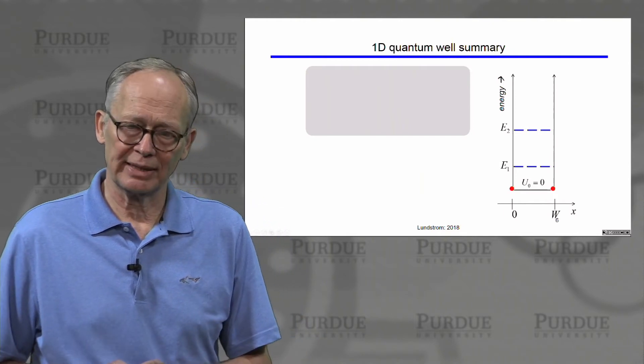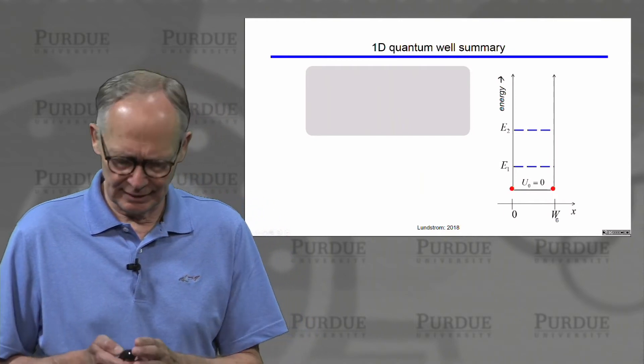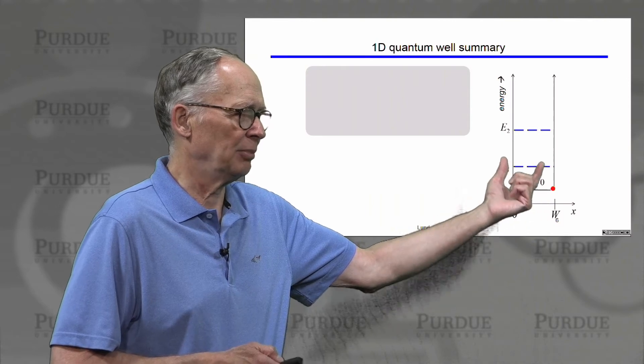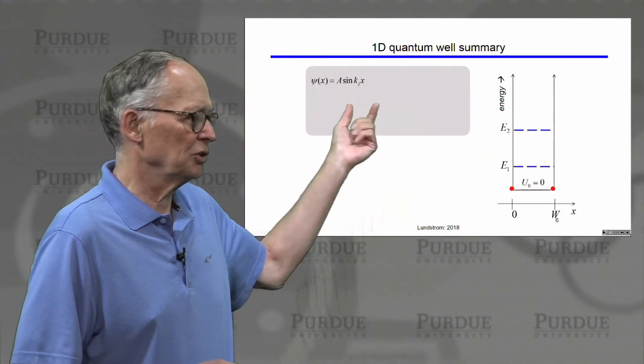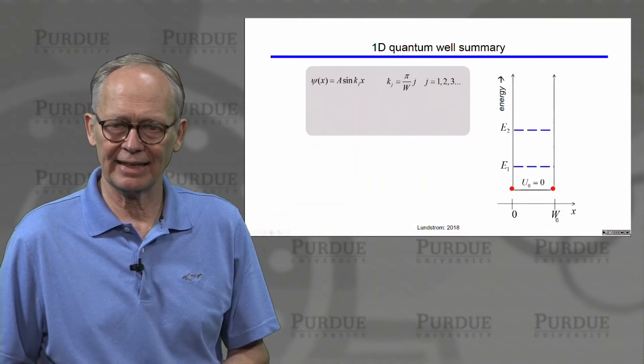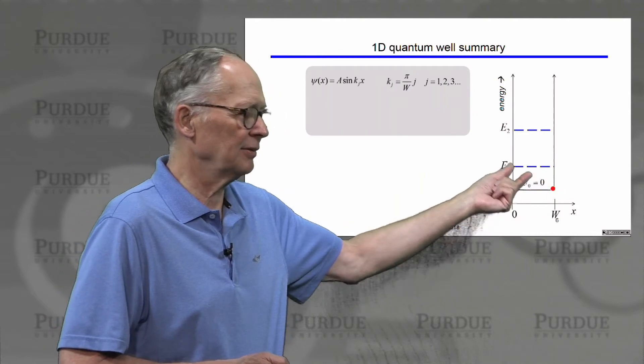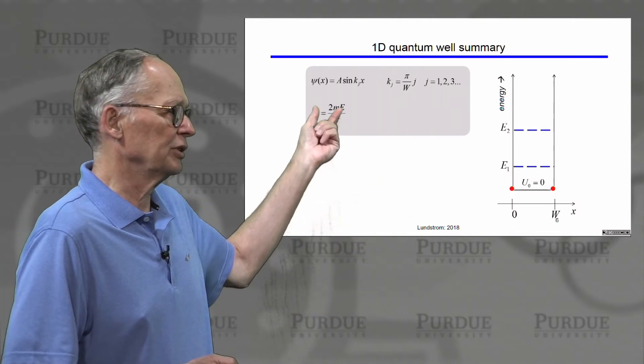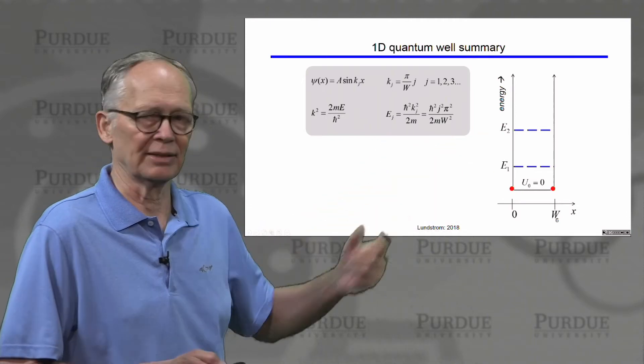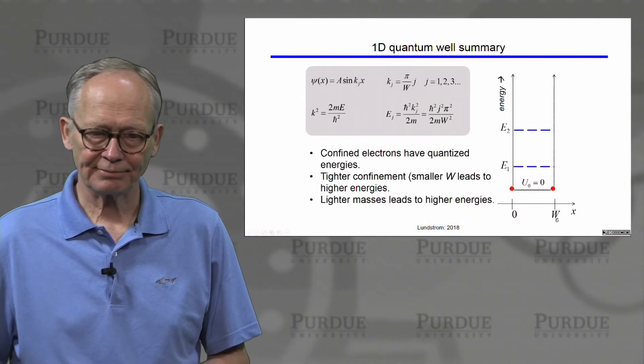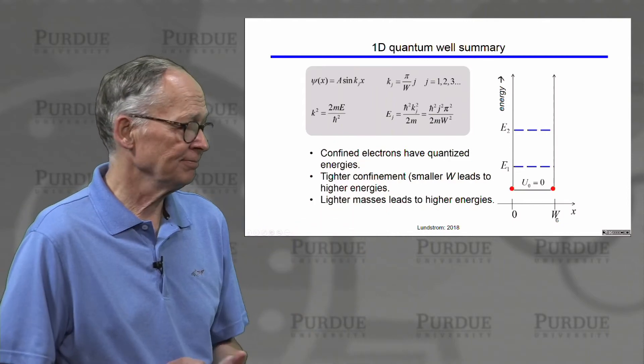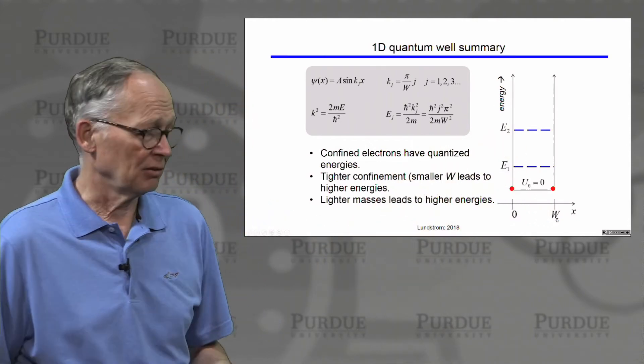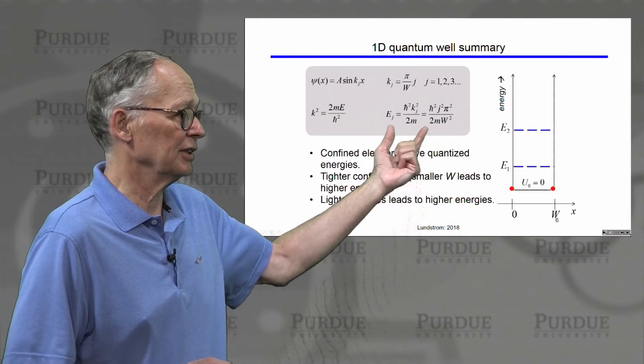Well one of the ways that quantum mechanics can play out in semiconductors is in quantum wells or quantum confinement. And we discussed this very simple particle in a box with infinitely high energy barriers. We saw that the solutions to the wave equations have a form sine kx. In order to satisfy the boundary conditions at both ends of the well, we had to impose conditions on k. Those conditions on k then impose conditions on energy and lead to these quantized energy levels in the particle in a box state. So confined electrons have quantized energies. The tighter the confinement, the smaller this w, the higher the energies. You can see that here. The lighter the effective mass, the higher the energies. You can see that here.